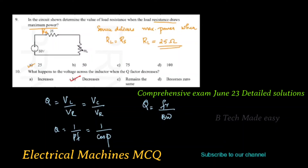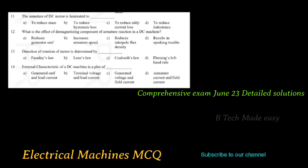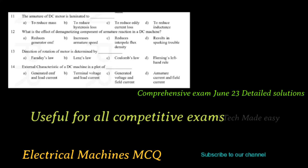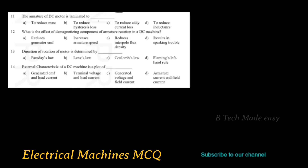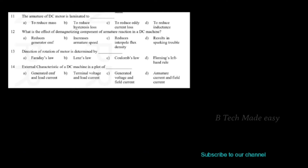We will discuss the first question from 11 to 20, on machines. The armature of a DC motor is laminated. What is the reason the armature of a DC motor is laminated? The options are: to reduce mass, to reduce hysteresis loss, to reduce eddy current loss, or to reduce inductance.